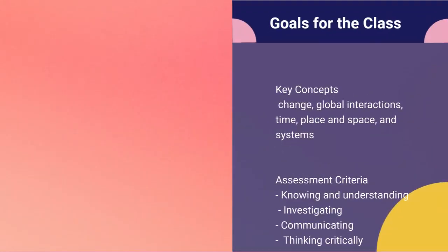We're going to cover four main key concepts in Individuals and Societies: change, global interaction, time, place and space, and systems. Our assessment criteria are going to be knowing and understanding, investigating, communicating, and thinking critically.